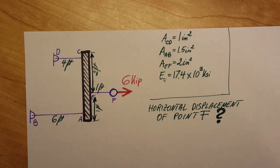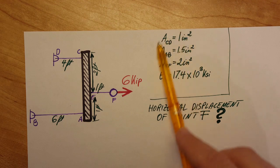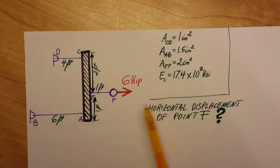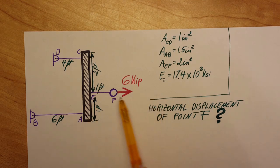The cross-sectional area of these three rods that are made of titanium are given, and also we have a force at point F which is six kips. They want us to determine the horizontal displacement of point F after this force is applied.